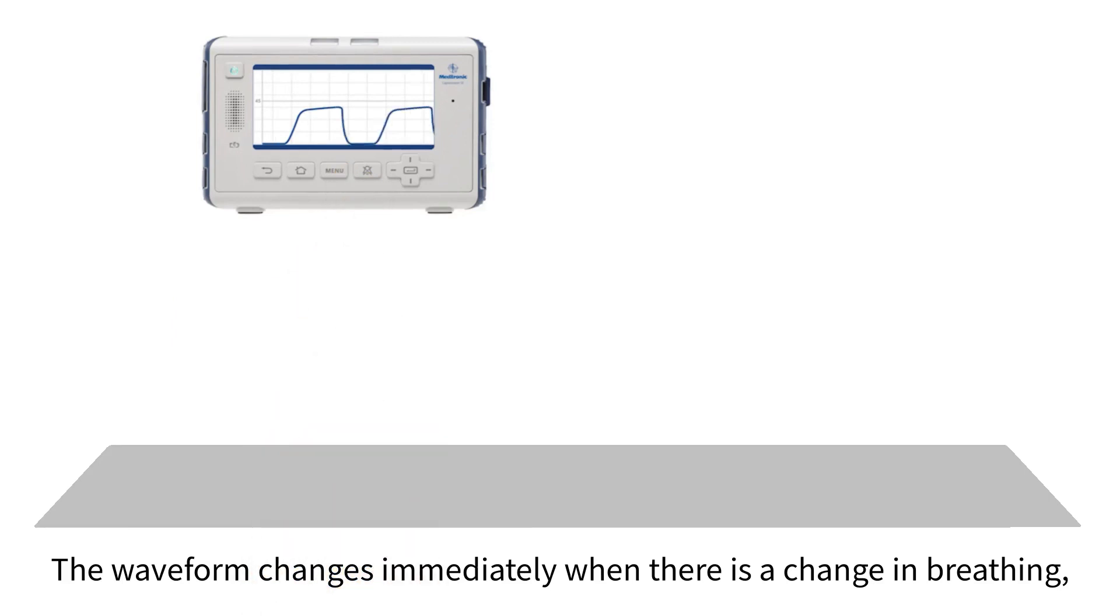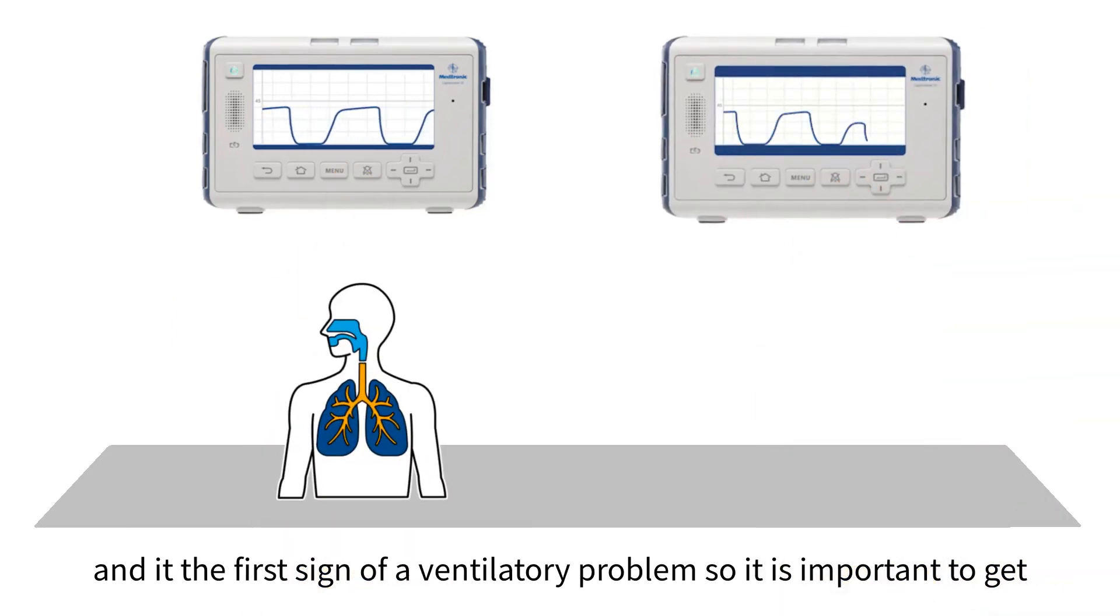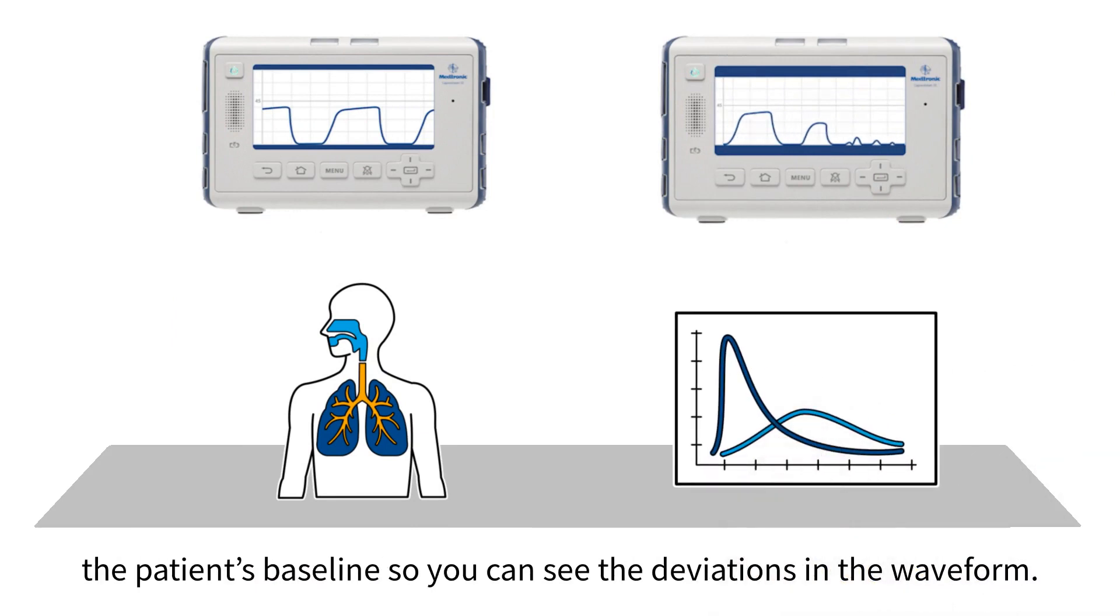The waveform changes immediately when there is a change in breathing and it is the first sign of a ventilatory problem. So it is important to get the patient's baseline so you can see the deviations in the waveform.